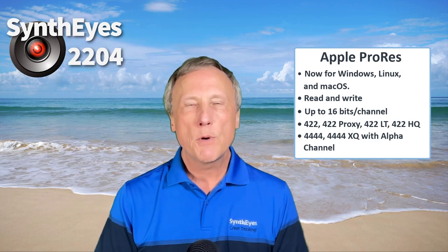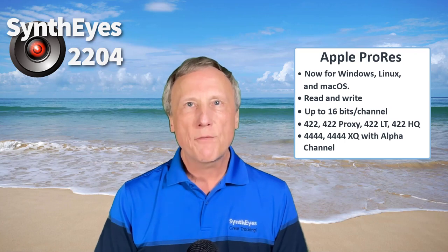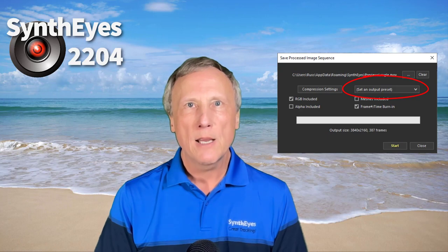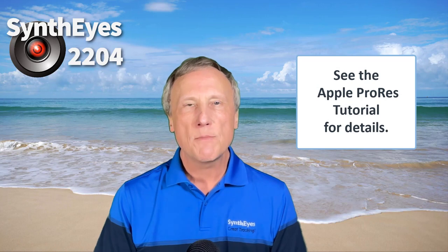First up is Apple ProRes on Windows and Linux for both read and write. It's improved for macOS too. All platforms support 16 bits per channel, and Apple ProRes 4444 and XQ can support an alpha channel. There's a new colorimetry setting when writing, and you can set up SynthEyes to bypass any color mapping and adjustments for saved sequences.